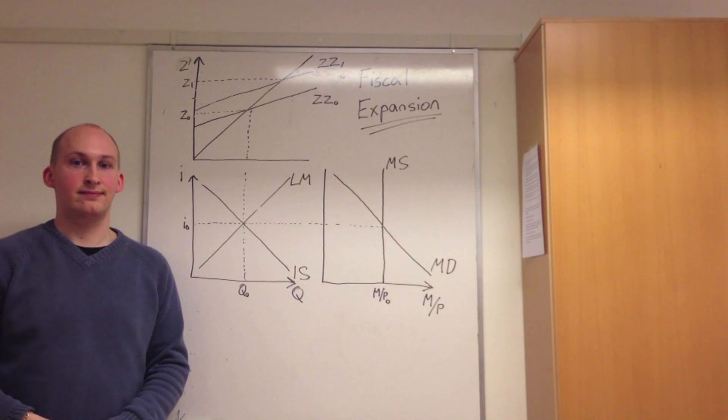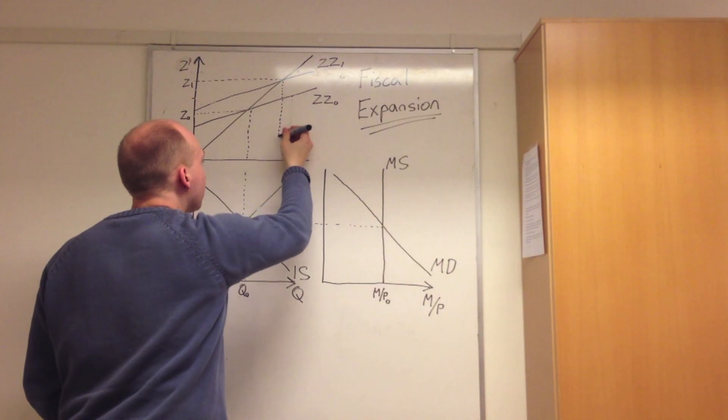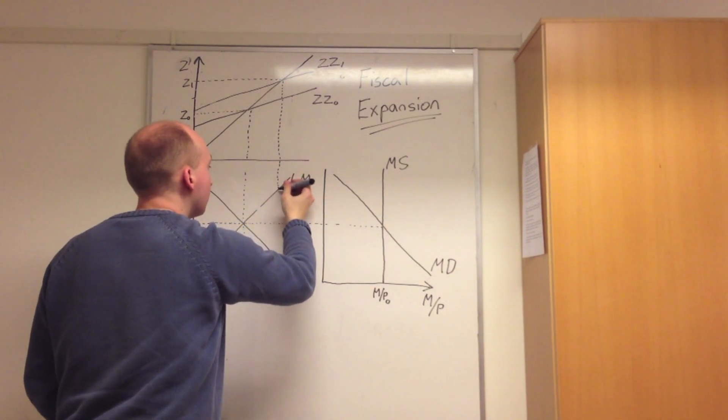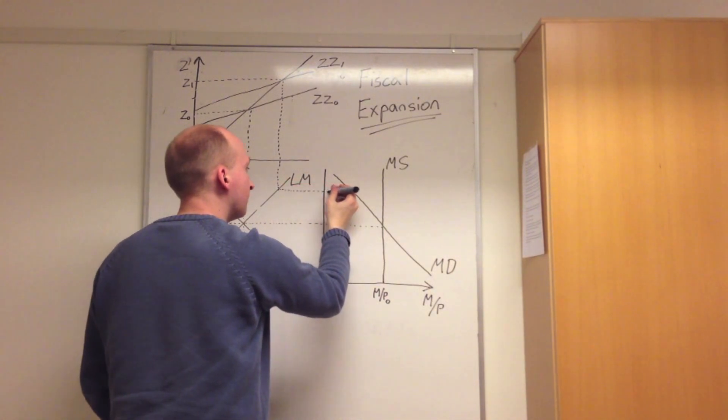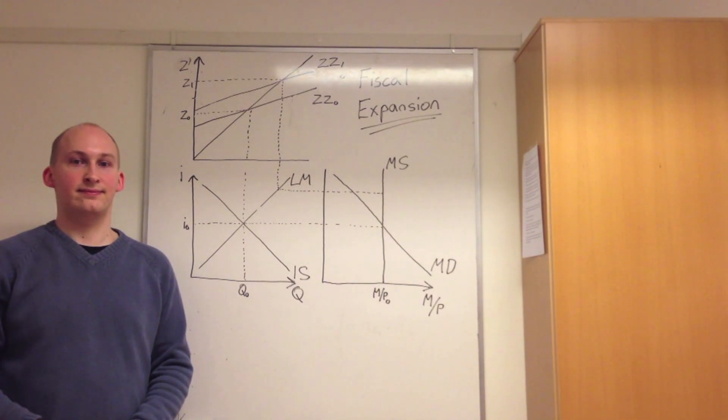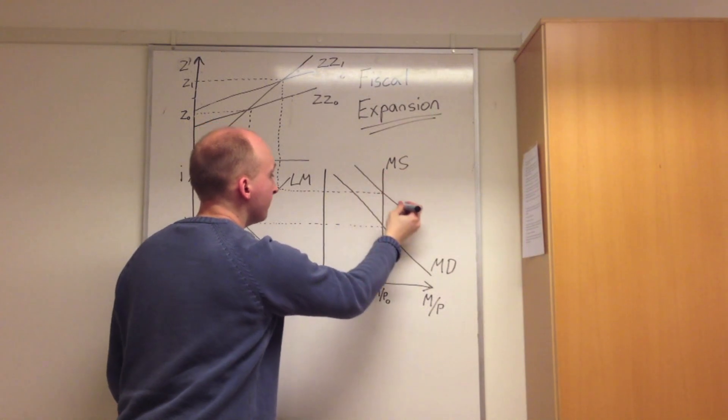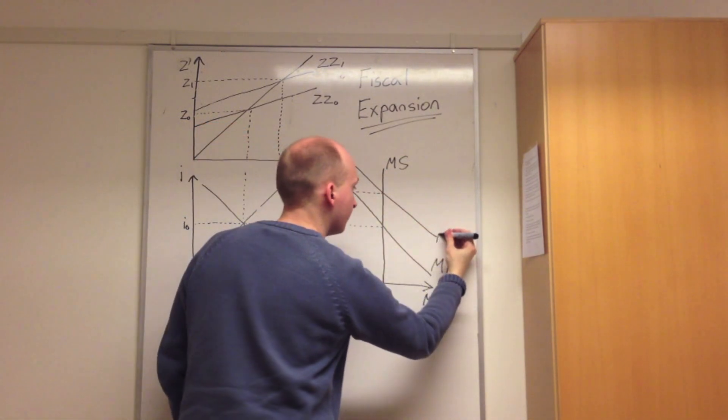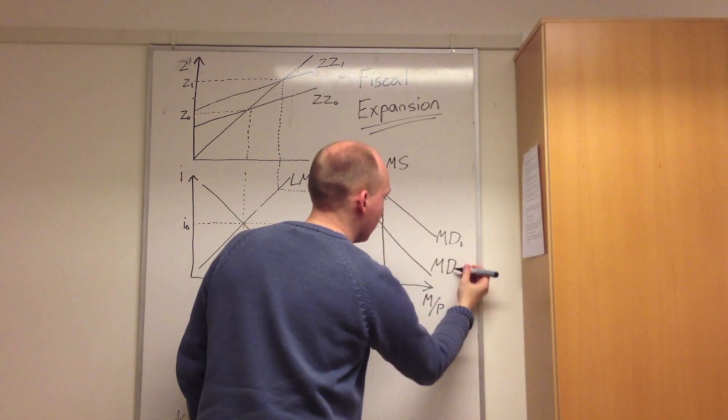However, as consumers actually increase their aggregate demand, we see that they also increase the demand for money. So here we go down towards the LM curve, which then intersects at the money supply line. This increase in money demand would shift the MD curve from MD0 to MD1, also giving us a higher interest rate value.